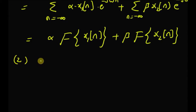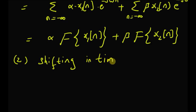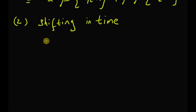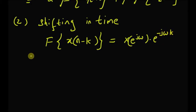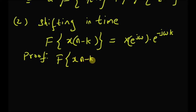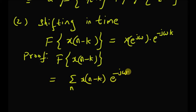Now let us look at the shifting property, that is, shifting in time. The time shift property basically says that the DTFT of a signal that is shifted in time is equal to the original DTFT multiplied by an exponential e power minus j omega k. Starting with the LHS, that is F of x of n minus k, which is a shifted version of the original signal, is equal to the sum of x of n minus k times e power minus j omega n.